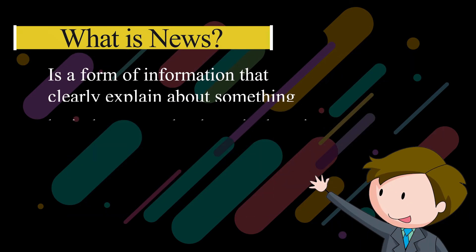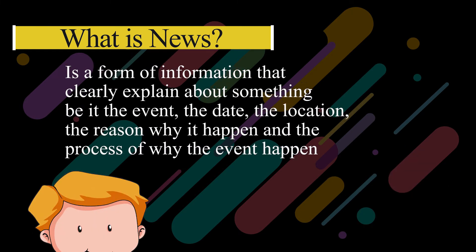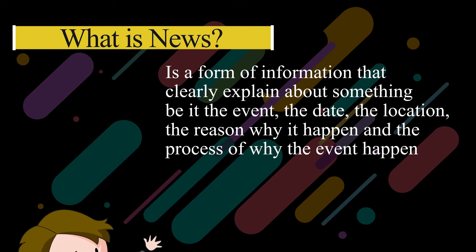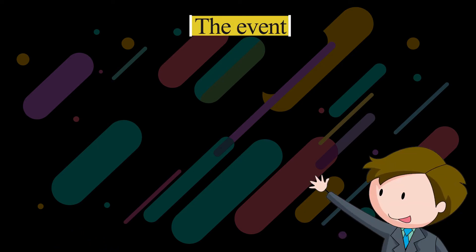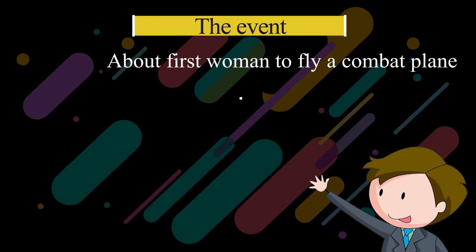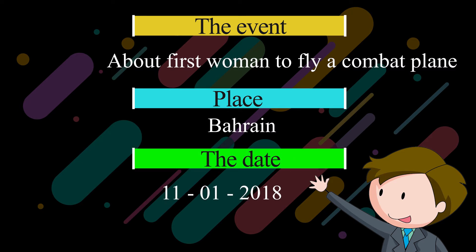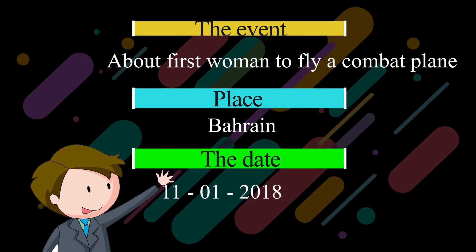News is a form of information that clearly explains about something — be it the event, the date, the location, the reason why such events happen, and the process of how the event happened. Those are the details that make an information or event become newsworthy.